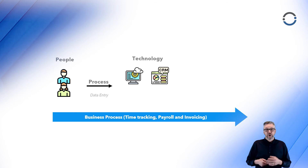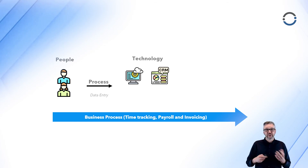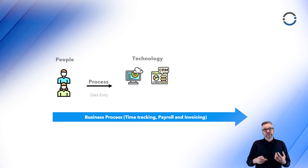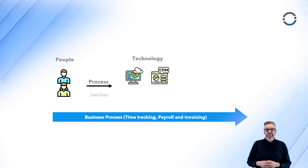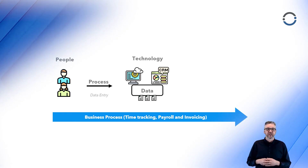If people understand the processes, follow them, and the quality of data is high in our technology, we're really starting to set ourselves up for optimization and automation. If we start violating these processes and things break down, that's where manual intervention needs to happen and the ability to automate starts to erode. After going through that process, we end up with data inside the technology, and then we want to look at it from the data consumer point of view.